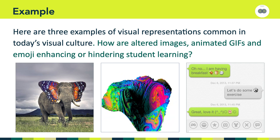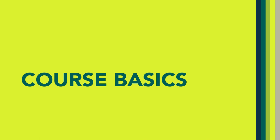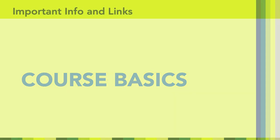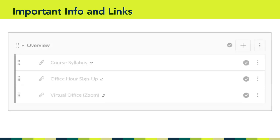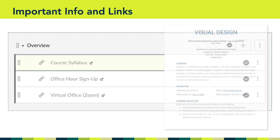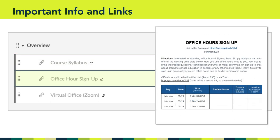That gives you a brief overview of the course itself. Now let's take a look at some of the basics of the class. The first thing I want you to take note of is the overview module in Canvas. There are a couple of important links and documents here. First and foremost, we have a link to the course syllabus, which is a Google document that you can view. I encourage everyone in the first week to take a close look at this and let me know if you have any questions or if anything is unclear.